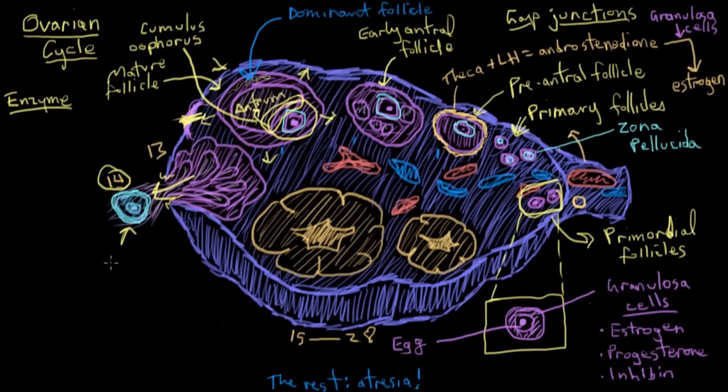So now you have the egg out here, but what about the old follicle it was in? The follicle actually collapses a little and transforms into a structure called the corpus luteum. And in this transformation, the granulosa cells get a lot bigger and start to produce more estrogen, progesterone, and that other hormone inhibin that we mentioned before.